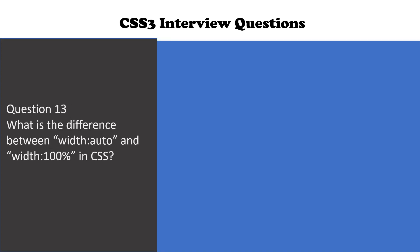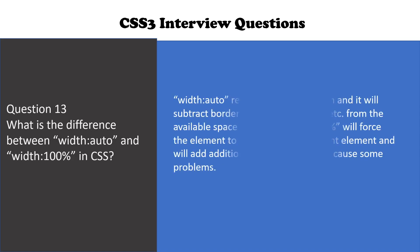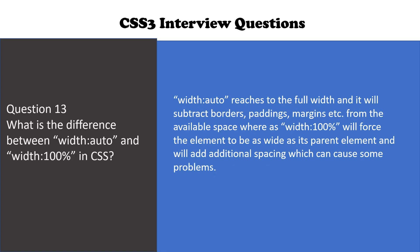Question number 13: what is the difference between width auto and width 100% in CSS? Width auto reaches to the full width and will subtract borders, paddings, and margins from the available space, whereas width 100% will force the element to be as wide as its parent element and will add additional spacing, which can cause some problems.